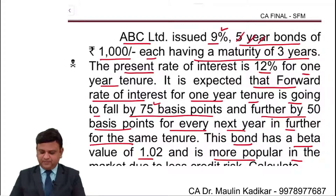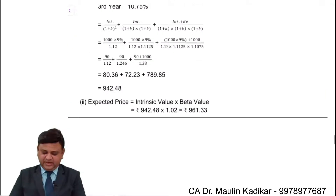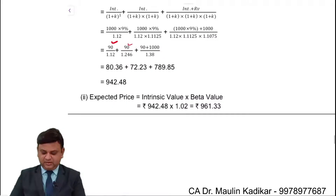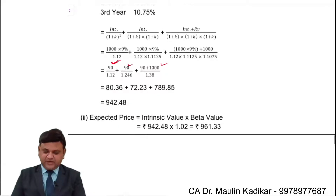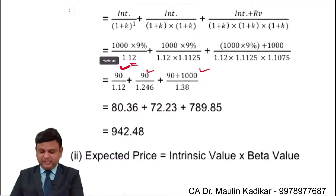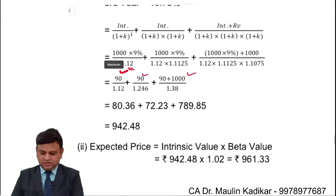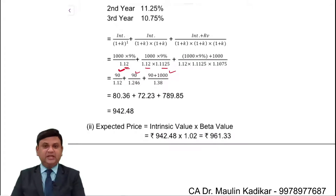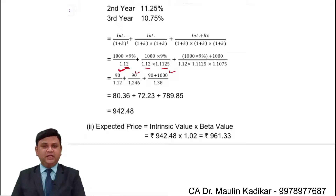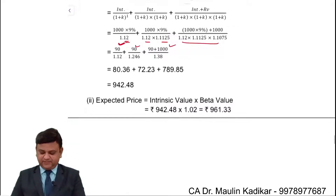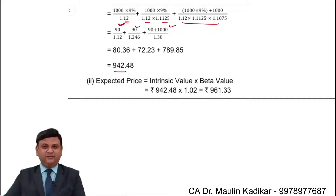The first year income is Rs.90 (1000 x 9%), the second year is also Rs.90, and the last year is Rs.90 plus Rs.1000. The discount rates used are: year 1 at 12%, year 2 at 11.25% (falling by 75 basis points — 100 basis points equals 1%), and year 3 at 10.75%. That is the way the intrinsic value is calculated.